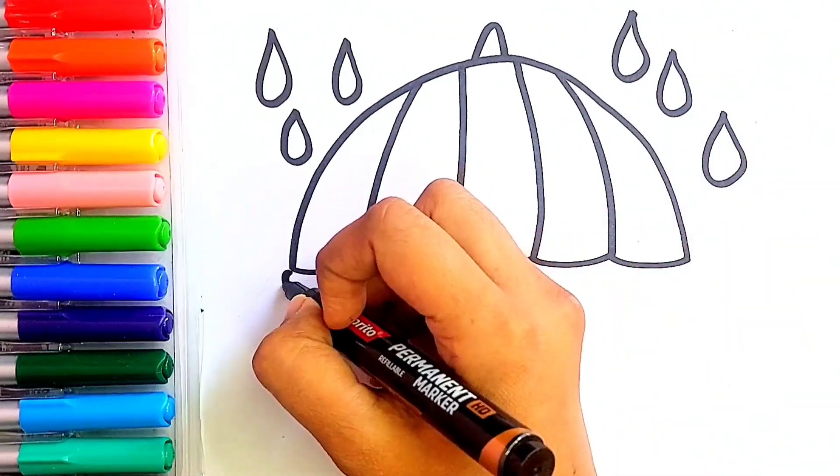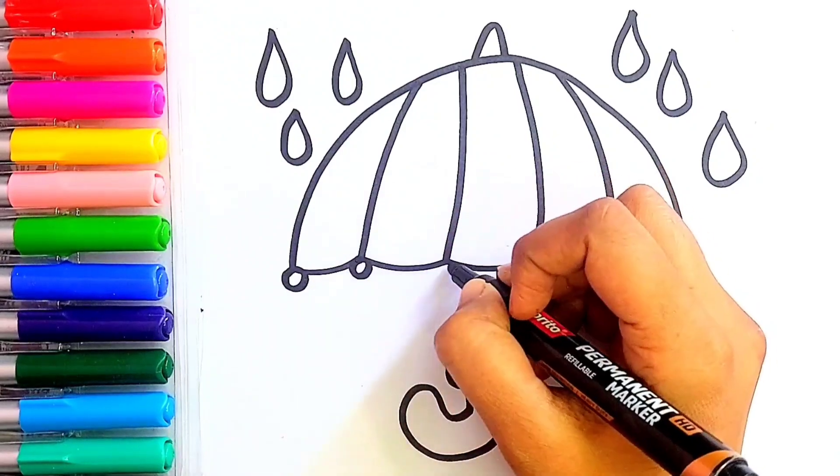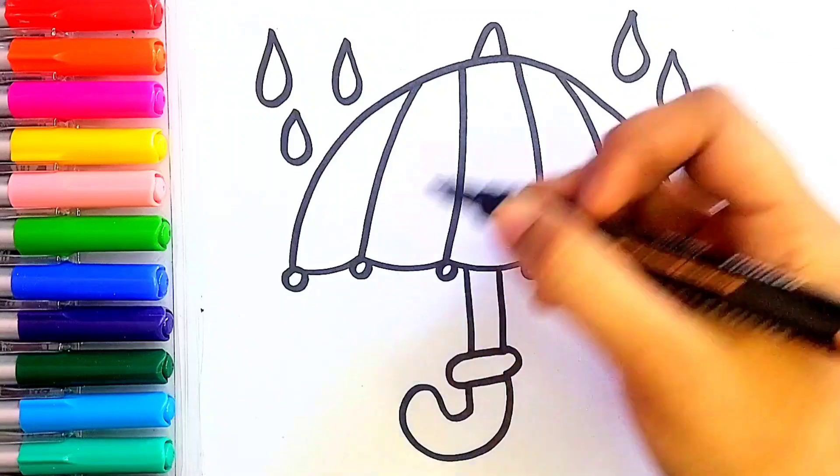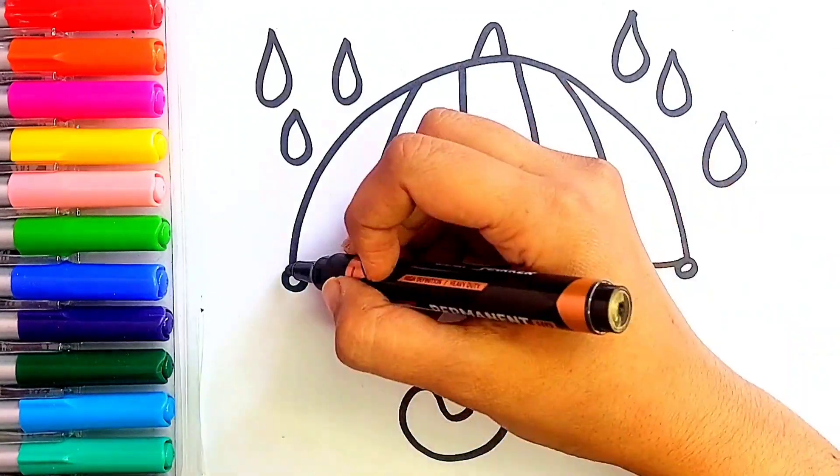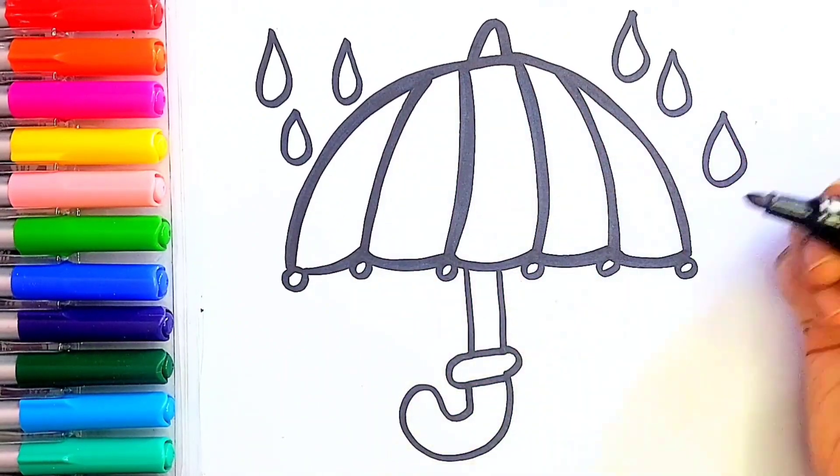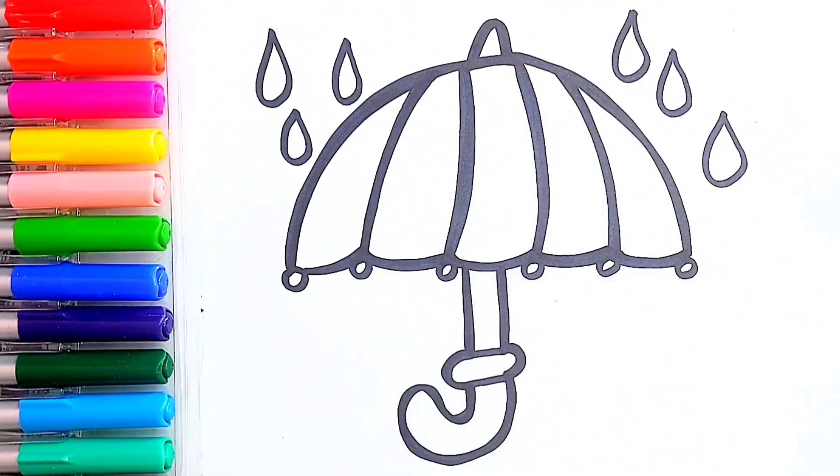Let's enhance the picture. Now with the help of black marker, I am going to enhance the picture. Great job Kids! Our picture is more visible to us now. Let's color the picture.